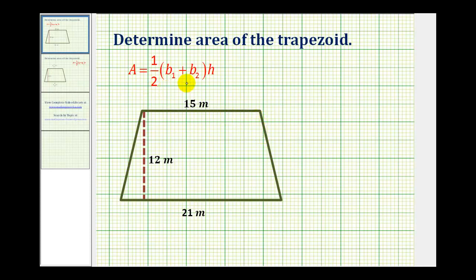The area of a trapezoid is given by the formula A equals one-half times the quantity b₁ plus b₂ times h, where b₁ and b₂ are the two parallel sides of the trapezoid and h is the height.